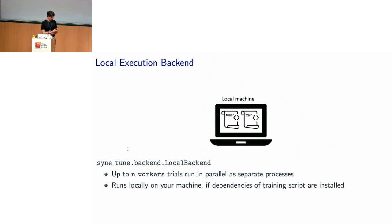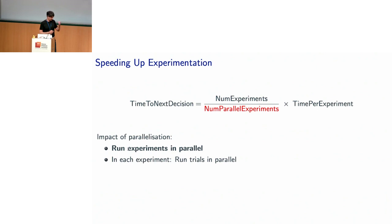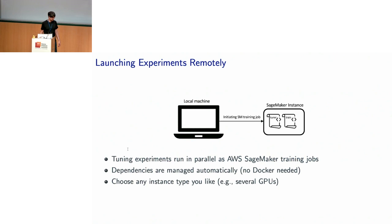This can run locally on your machine or laptop if training script dependencies are installed, but it's pretty tedious and not very fast. If you want to get experiments done faster, you can run them in parallel. That's fairly easy in SyneTune by simply launching experiments remotely — you take an experiment running with a local backend and just send it to the cloud, running them in parallel as SageMaker training jobs. You don't need to build a Docker image; dependencies are managed automatically, and you can choose any instance type.